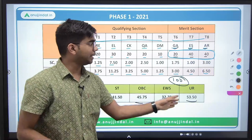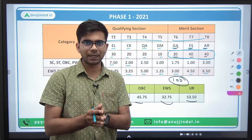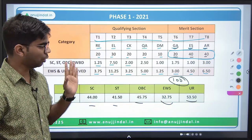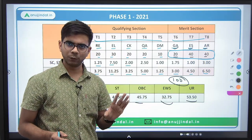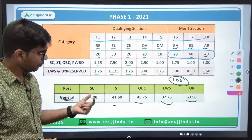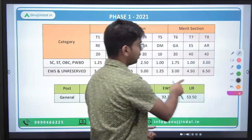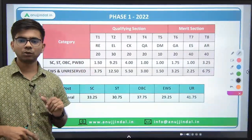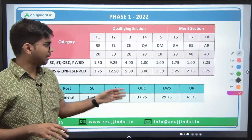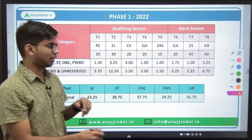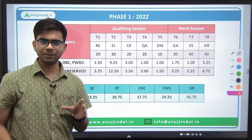The cutoff in 2021 was 53.50 for unreserved category. When I compare it with 2022, you will not find a major difference in the sectional cutoff. Sectional cutoff mein koi major difference nahi milega — you may find a little bit of difference.